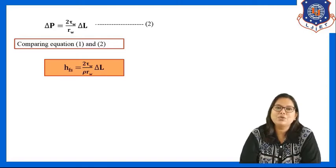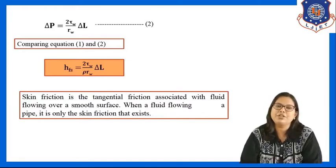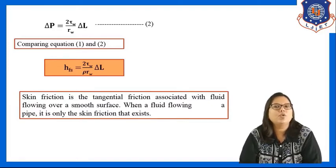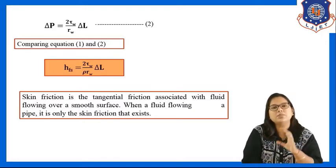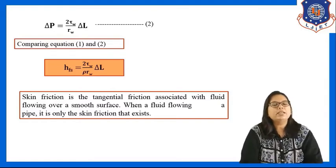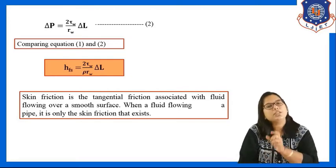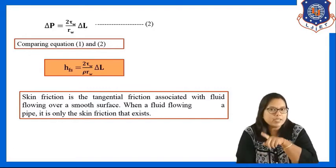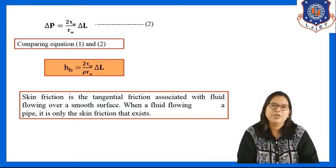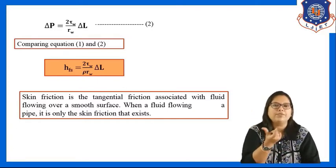Skin friction is the tangential friction associated with the fluid flowing over a smooth surface. When a fluid flows in a pipe, only skin friction exists. So Hfs = 2*tau_w * delta L / (rho * rw) is the relation between skin friction Hfs and wall shear tau_w.